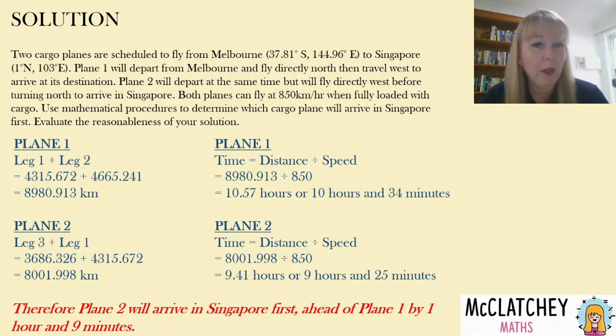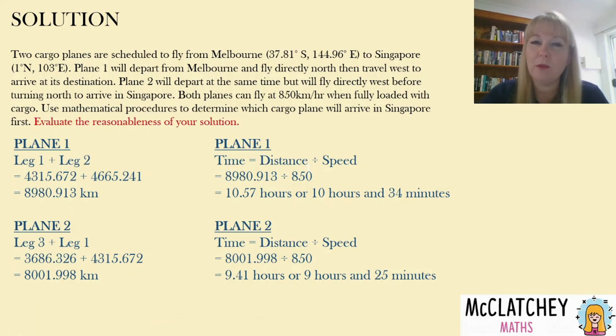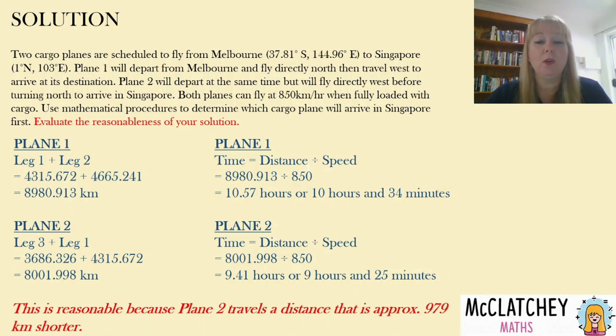Now we've done a lot of mathematical working so far but we haven't really evaluated the reasonableness of our solution which is what the question is asking us to do as well. So we need to think about and this could be where you could explain that plane two is traveling on a smaller small circle because it's closer to the pole than plane one which is traveling on a one degree north which is almost as long as the equator itself so it's a much bigger circle. You could also say it's reasonable because you've just worked out mathematically that plane two is traveling a distance that's approximately 970 kilometers shorter which is almost the distance between Sydney and Melbourne so it's definitely going to get there first.